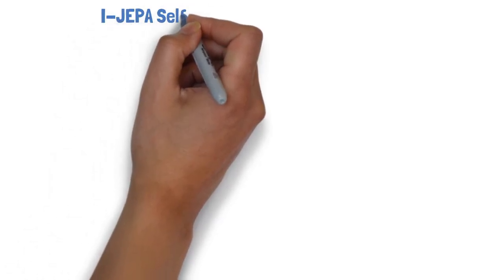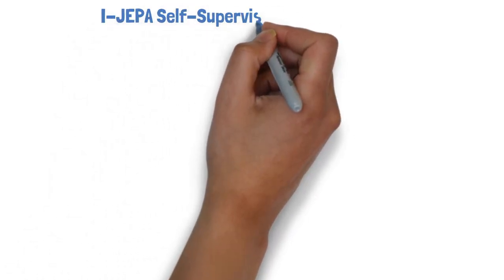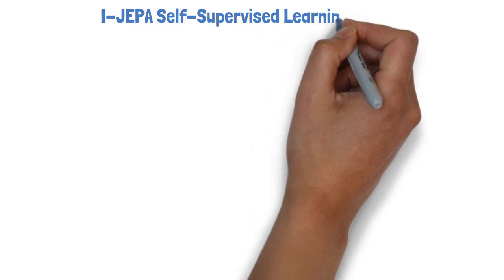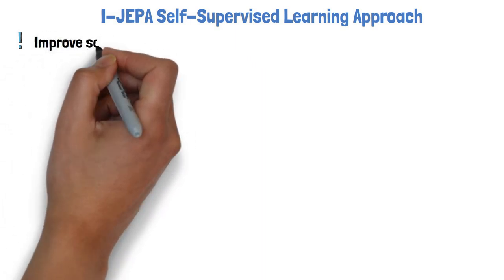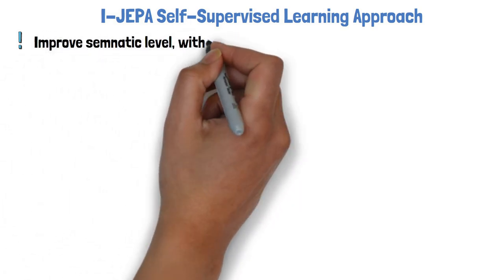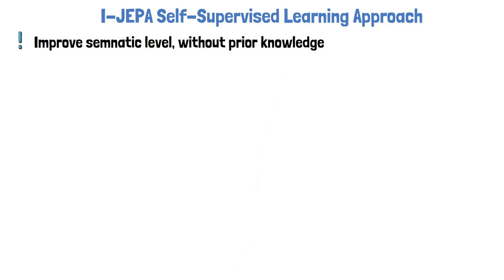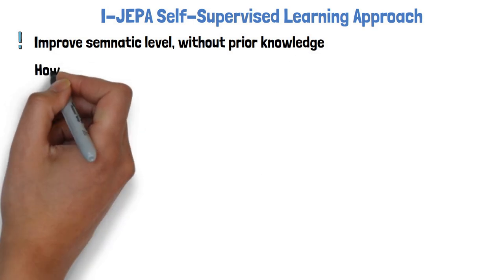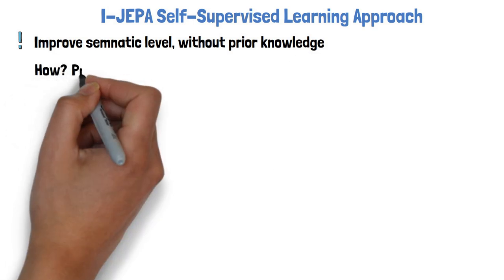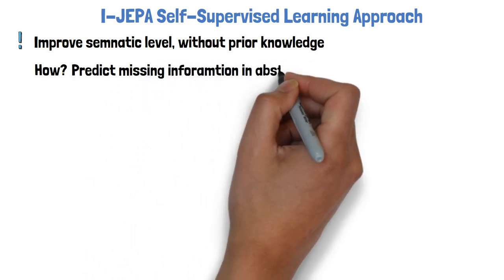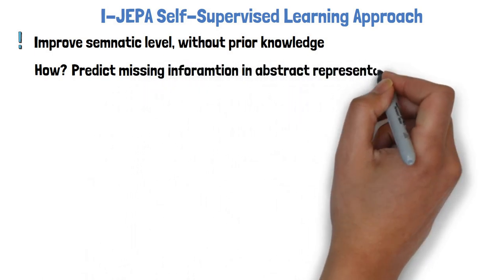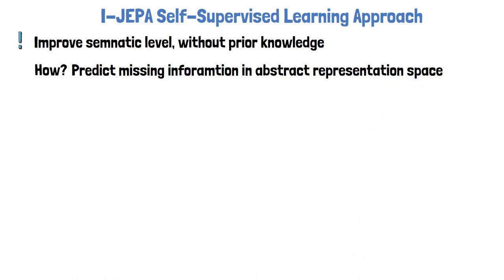We are now ready to talk about the self-supervised learning approach that iJEPA brings. We'll dive into their architecture in detail in a moment, but first let's understand their goal and main idea. Their goal is to improve the semantic level of representations without using prior knowledge such as similar images created with data augmentation. Their main idea to achieve that is to predict missing information in abstract representation space.